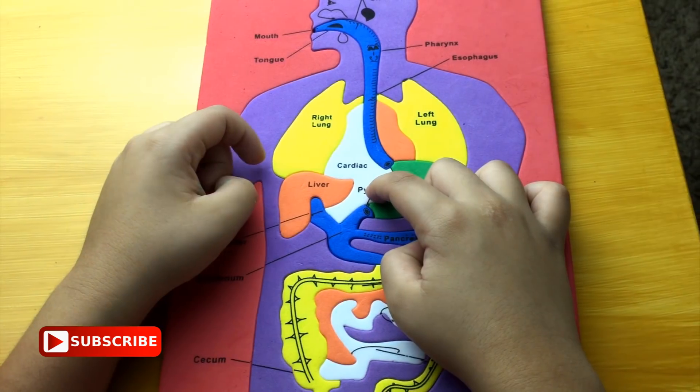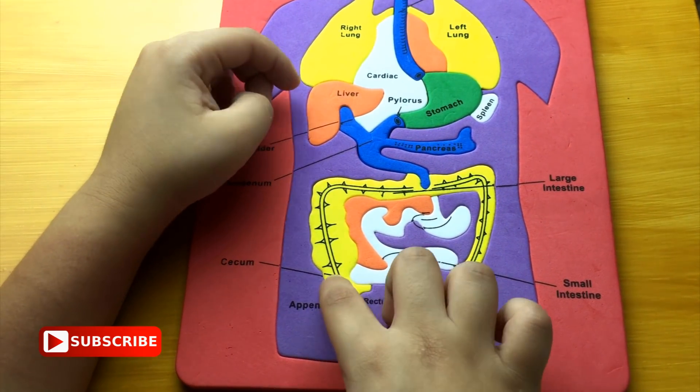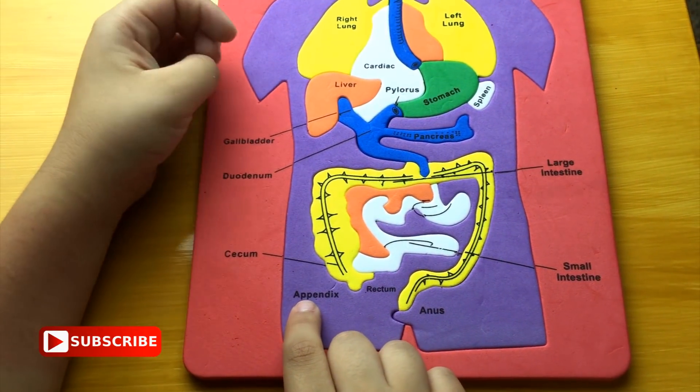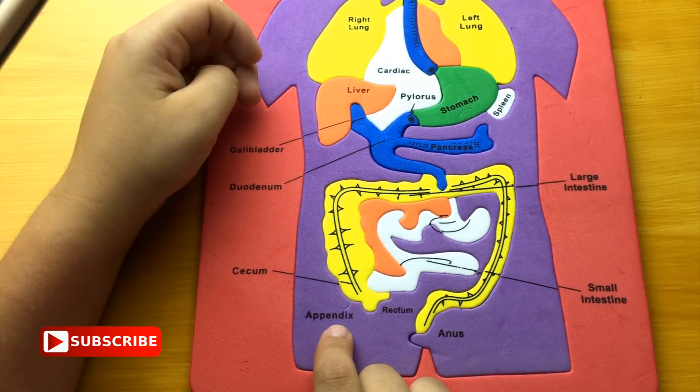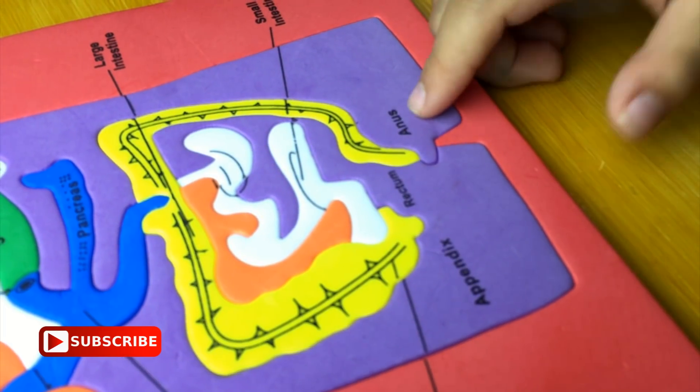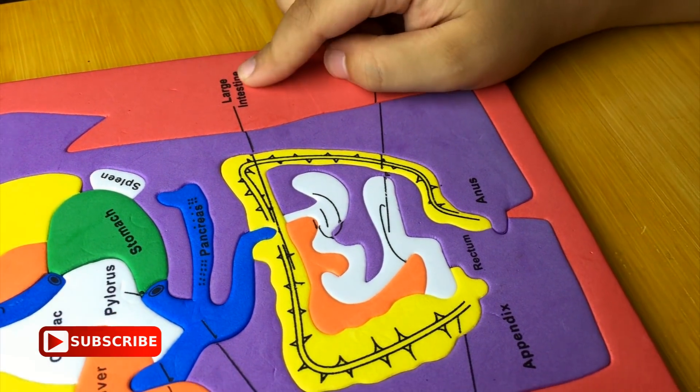This is pylorus, this is cecum, this is appendix, this is rectum, this is anus, this is small intestine, this is large intestine.